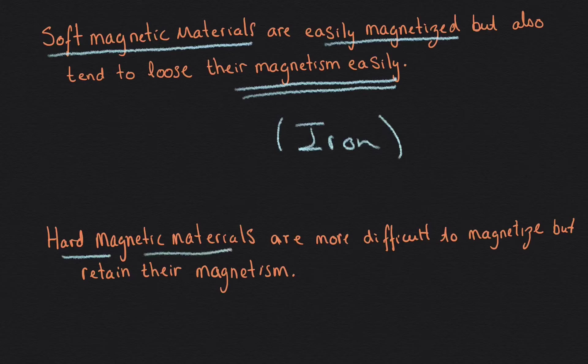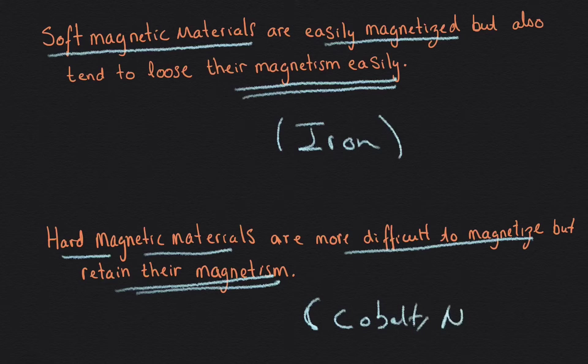And on the same trend of thought, we have hard magnetic materials. And these are materials that are actually more difficult to magnetize, but also retain their magnetism or magnetization much more. And a few examples can be cobalt is an example, or nickel can be another example. So when we talk about soft magnetic materials, they're easier to magnetize, but also easier to lose their magnetization. And hard magnetic materials are more difficult to magnetize, but at the same time, they will retain their magnetization more.